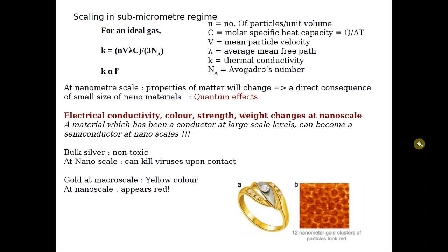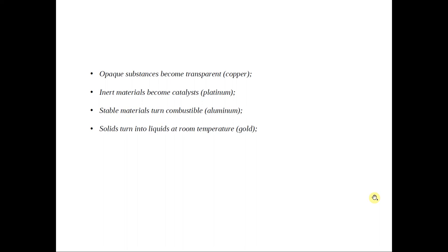The best example you can visualize: a golden ring at centimeter scale appears yellow in color. But the moment you bring it to nanoscale, all the golden atoms appear reddish. Additionally, opaque substances can become transparent — for example, copper, which you cannot see through in bulk but can become transparent at nano level. And inert materials can become catalysts — for example, platinum.